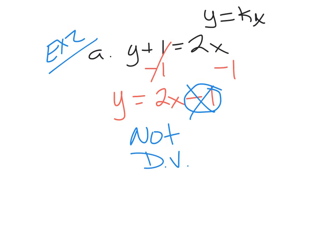You have to solve for y first. Then if you have a y-intercept other than zero, it's not direct variation, because it doesn't go through the origin. If I were to graph this, it would go through down here, not through zero, zero. It has to go through the middle at zero, zero. So if there's anything attached to the end of this equation — plus, minus, anything — it's not direct variation.